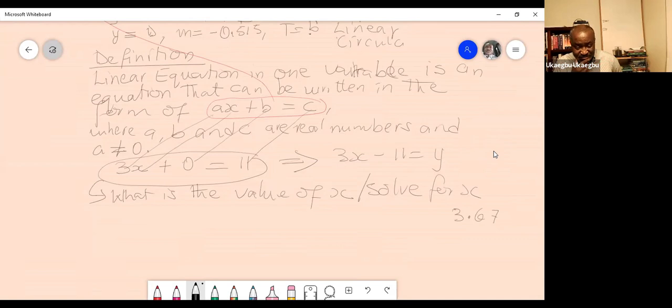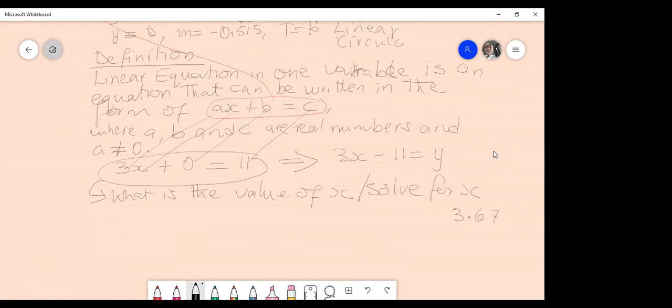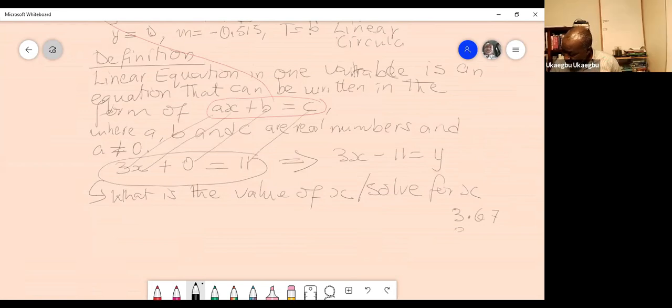Did any other person get the same number or different number? Can I round it to three point seven? Okay. That's three point seven. That's rounding to one place of decimal.